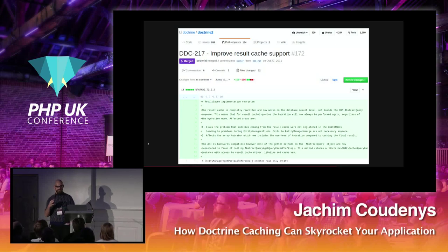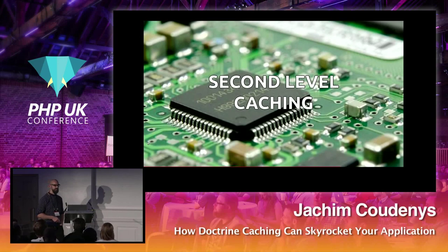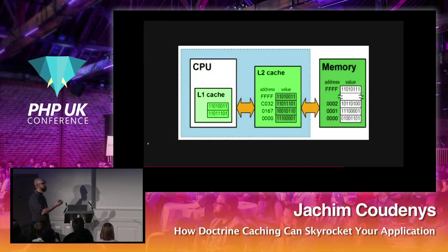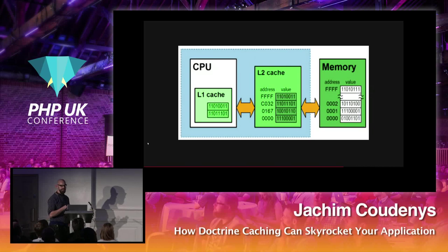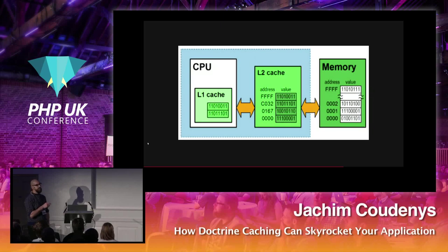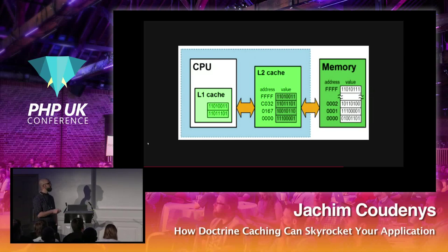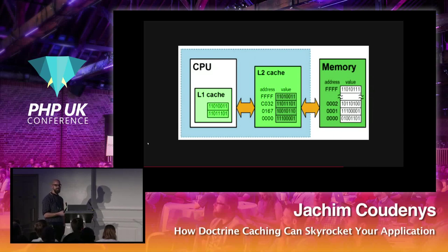There is a new feature since Doctrine 2.5: second-level caching — analogous to CPU cache levels. The Unit of Work is like the CPU; its level-one cache is the identity map. Then we have the entity manager, which stores non-hydrated data close by as second-level cache. If it's not there, it goes to memory — in our case the database. The further out you go, the slower it gets.